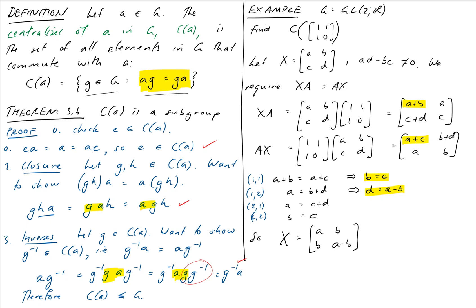And we require the determinant is non-zero. So A times A minus B minus B squared equals A squared minus AB minus B squared is not equal to zero. So any matrix of that form is in the centralizer of 1, 1, 1, 0.